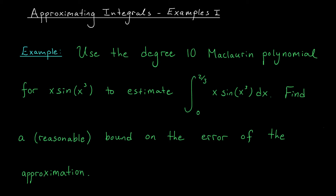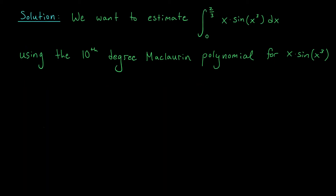Hi everyone, and welcome back. In this video, we're going to use what we know about Taylor polynomials to approximate the value of this integral — the integral of x·sin(x³) from zero to two-thirds. We'll estimate its value using a tenth degree Maclaurin polynomial for the function x·sin(x³).